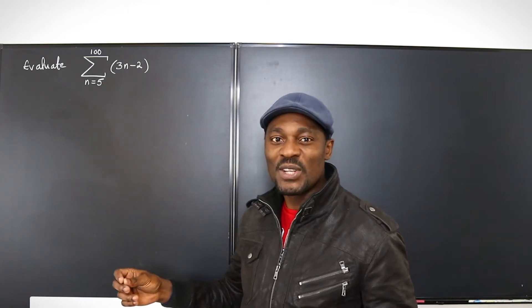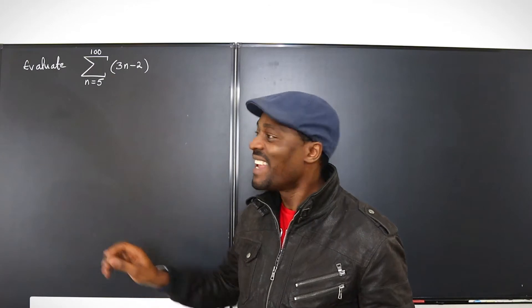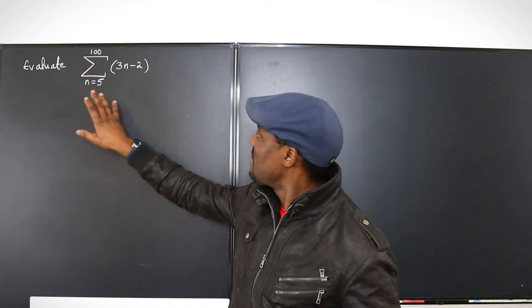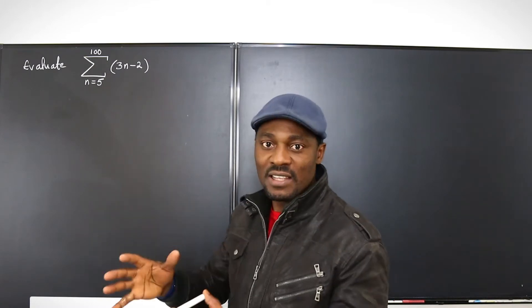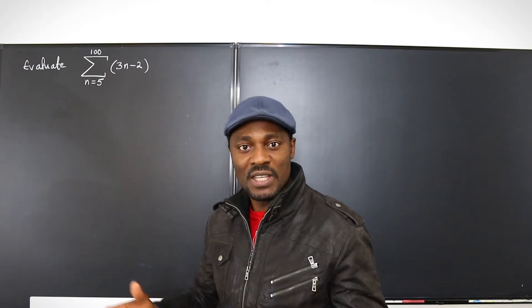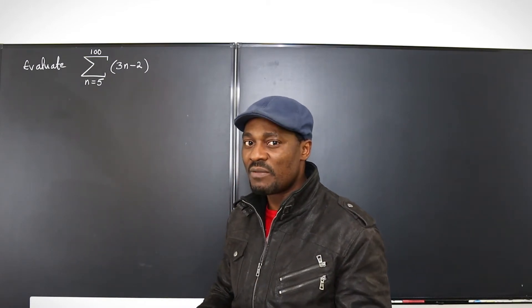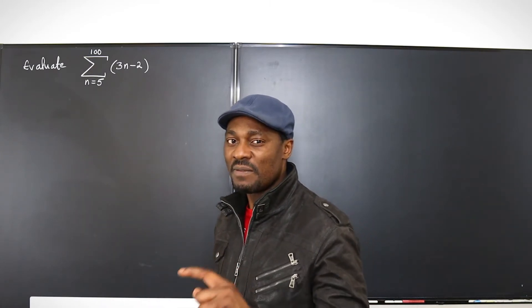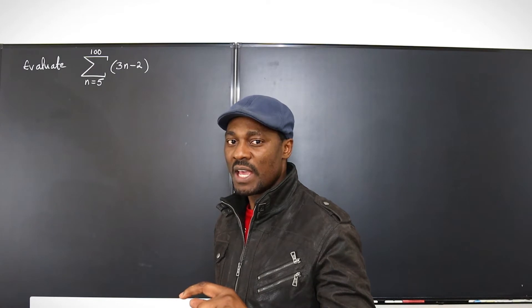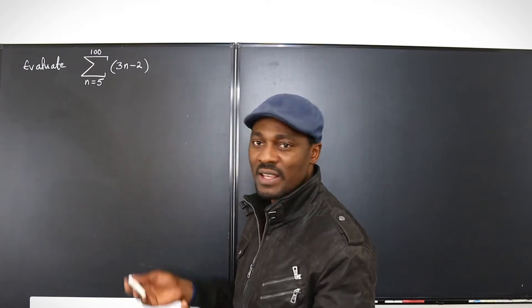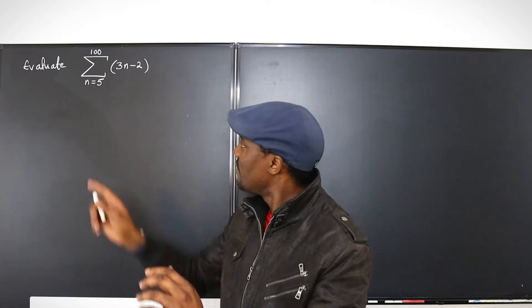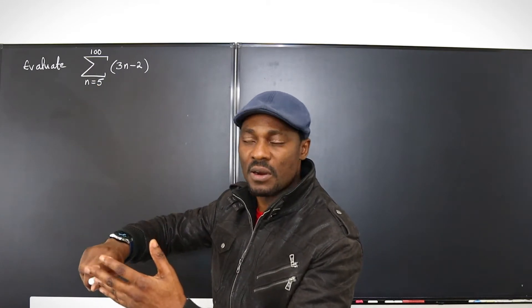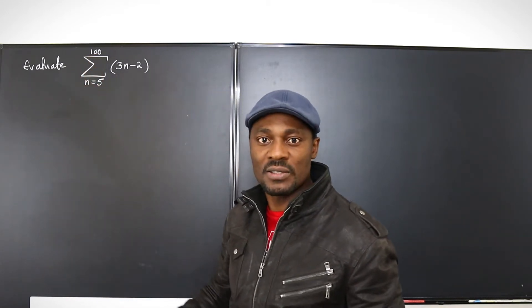The series doesn't even start from the beginning — it starts when n is equal to 5. So we're going to be adding terms together but not starting from the beginning of the series; we're starting from the fifth term. We want to add the fifth term to the sixth term, to the seventh term, all the way until we get to the 100th term.